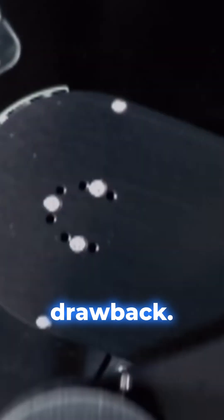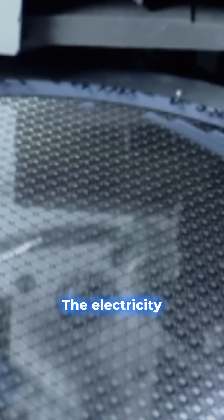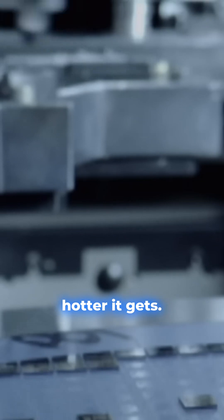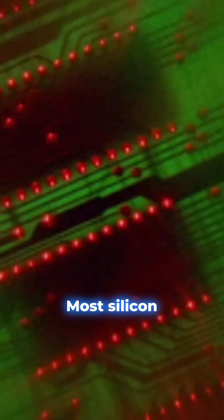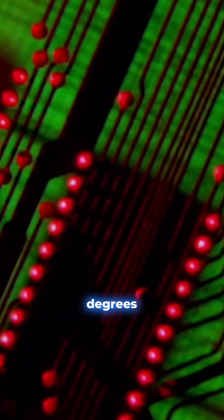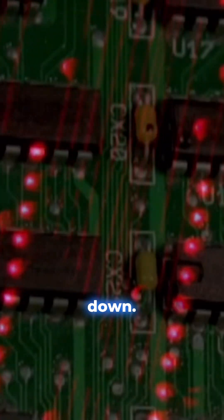But silicon has a major drawback. The more electricity it carries, the hotter it gets. The result? Most silicon chips require complex cooling technology. If they exceed about 300 degrees Fahrenheit, they'll shut down.